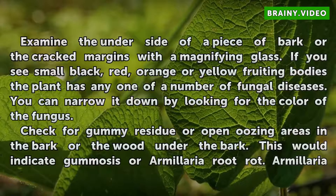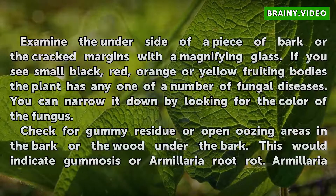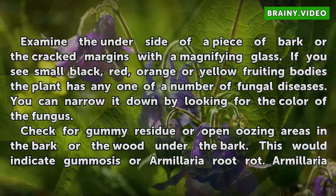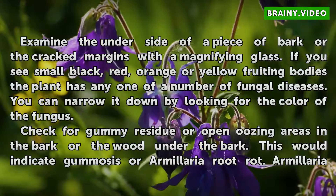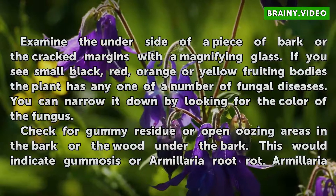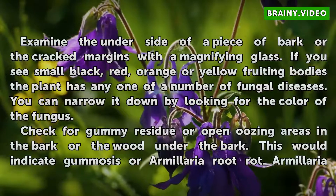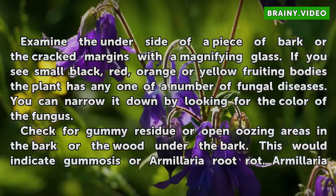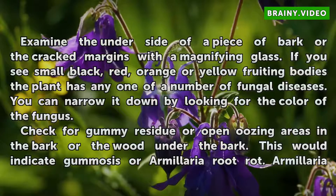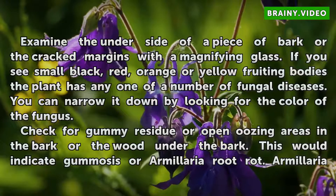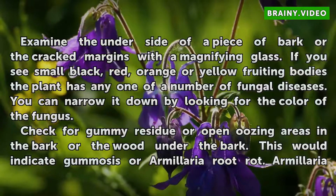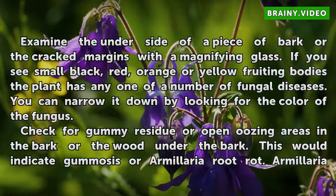Examine the underside of a piece of bark or the cracked margins with the magnifying glass. If you see small black, red, orange, or yellow fruiting bodies, the plant has any one of a number of fungal diseases. You can narrow it down by looking for the color of the fungus.